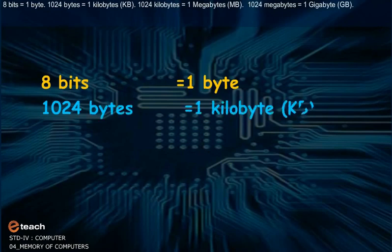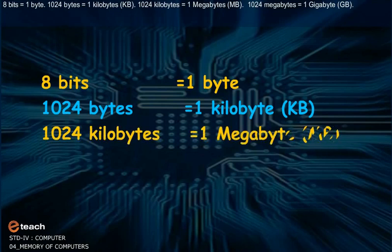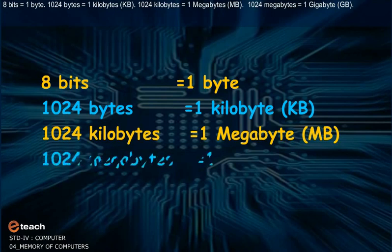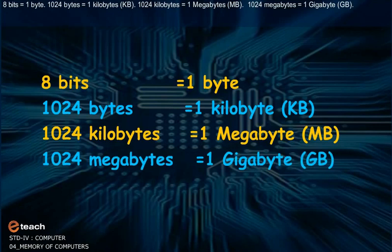1024 bytes is equal to 1 kilobyte, that is, KB. 1024 kilobytes is equal to 1 megabyte, that is, MB. 1024 megabytes is equal to 1 gigabyte, that is, GB.